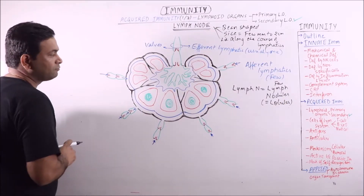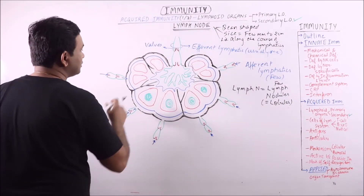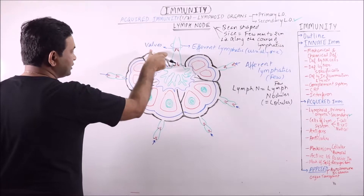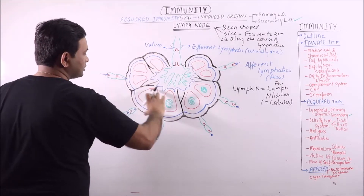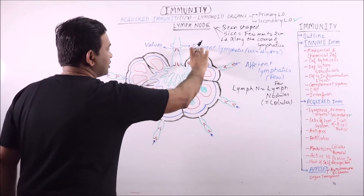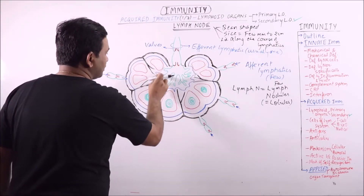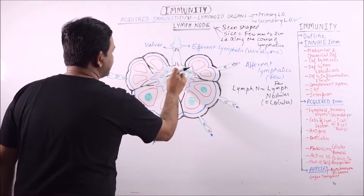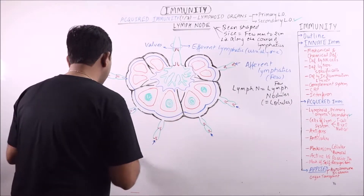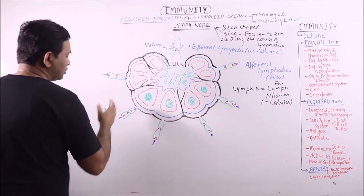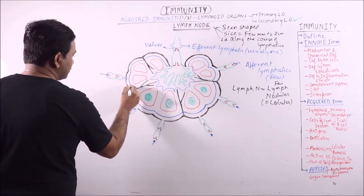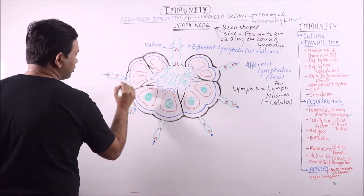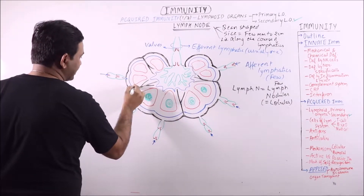A typical lymph node is divided into 3 regions. The first one is the cortex, the second is the paracortex, and the third is the medulla.